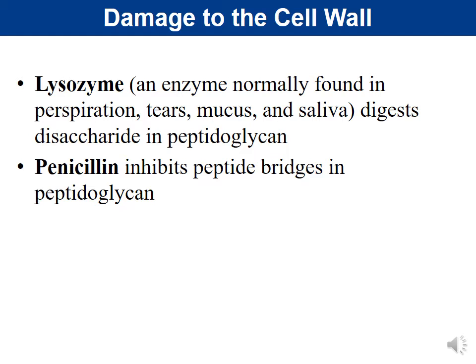Now we'll look at what damages cell walls. The first is lysozyme, an enzyme normally found in perspiration, tears, mucus, and saliva. The body produces lysozyme as a defense mechanism to inhibit microbial growth. It actually breaks down or digests the disaccharides in the peptidoglycan, causing damage to the cells, which may then die.